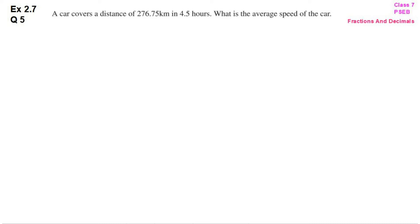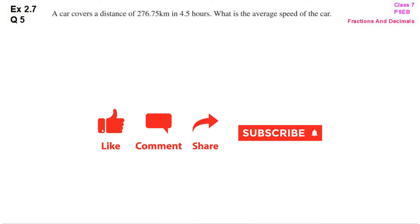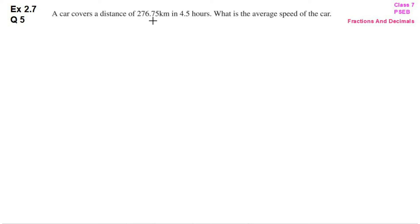Hello students, welcome back to this channel. In this video we will solve question number 5th, exercise 2.7 from PSCB textbook. A car covers a distance of 276.75 km in 4.5 hours. We have to find out the average speed of the car.